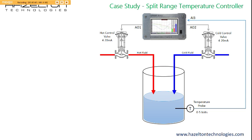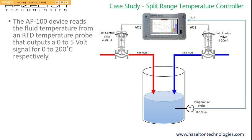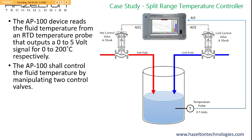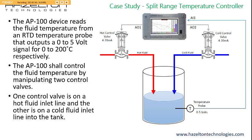In this case study, the AP100 advanced process controller is used to control the temperature of fluid within a tank with its internal PID controller. The AP100 reads the fluid temperature from an RTD temperature probe that outputs a 0 to 5 volt signal for 0 to 200 degrees Celsius respectively. The AP100 controls the fluid temperature by manipulating two control valves: one on the hot fluid inlet line and the other on the cold fluid inlet line. Both control valves receive a 4 to 20 milliamp signal for 0% to 100% open.